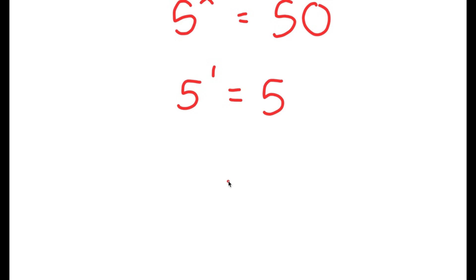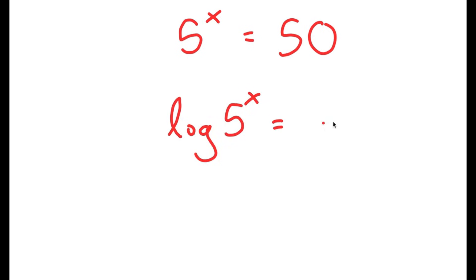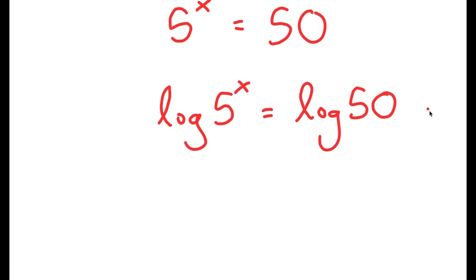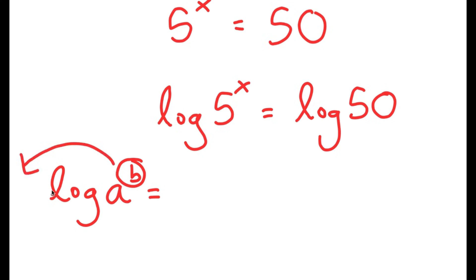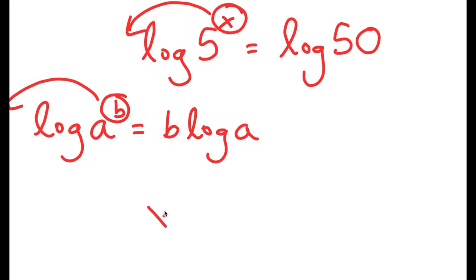So how are we going to find the exact value of x? We're going to use logarithms. I'm going to take the log on both sides, so I get log 5 to the power of x is equal to log 50. Logarithms have a special property: if I have something in the form log a to the power of b, I can move the exponent b to the front, turning it into b times log a. So I can move x to the front, and I get x times log 5 is equal to log 50.